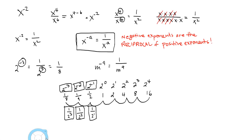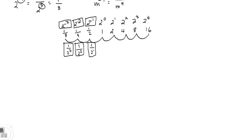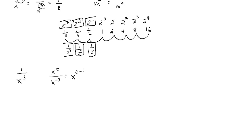What if the negative exponent is in the denominator to begin with? What if I have 1 over x to the minus 3? One way to look at it: we can rewrite 1 using the base x — anything to the zero power is 1, so I can rewrite 1 as x to the 0. Then using the quotient rule: x to the 0 minus a minus 3 — that's 0 minus a negative, which is plus 3 — giving us x to the third. So 1 over x to the minus 3 is x to the positive 3.